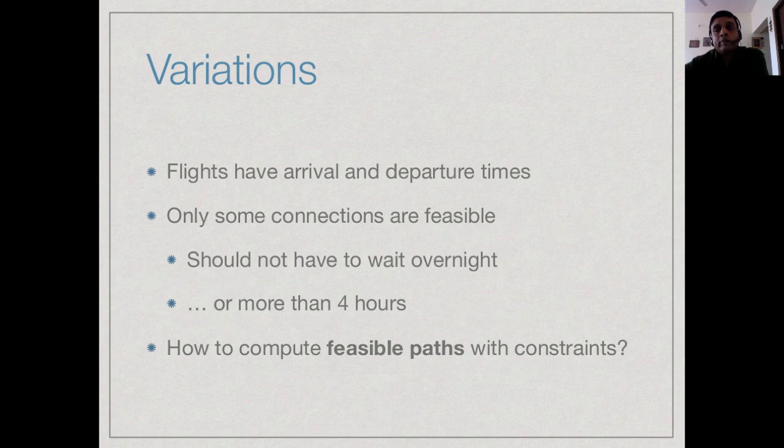So now our problem becomes a little more constrained. We don't just want to look at connected paths from A to B, but connected paths A to B which meet some additional constraints in terms of timing and other things. Can we solve this problem with the same approach that we solve the simpler problem or do we need to take a radically different approach or do we need more information in order to decide how to solve the problem?